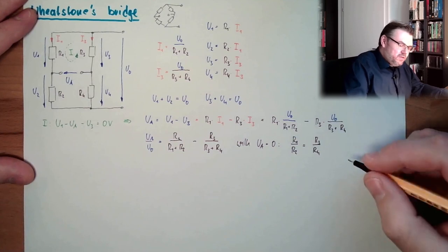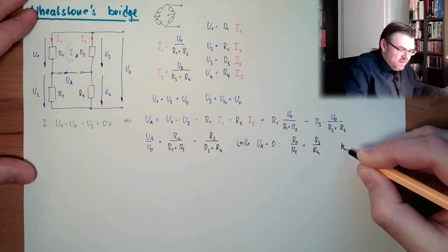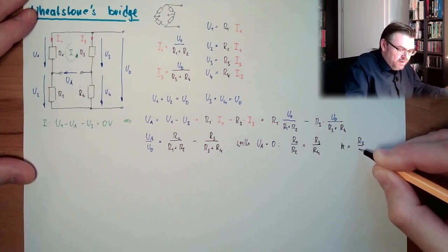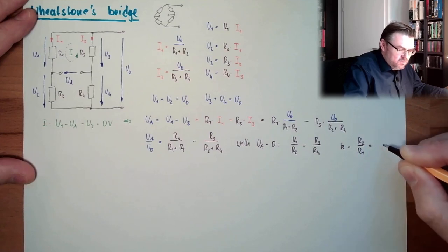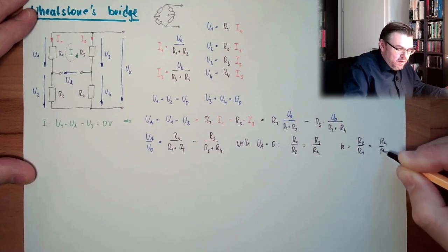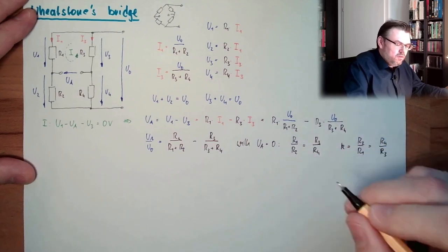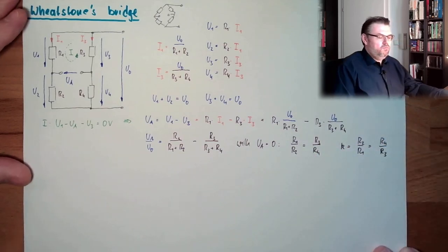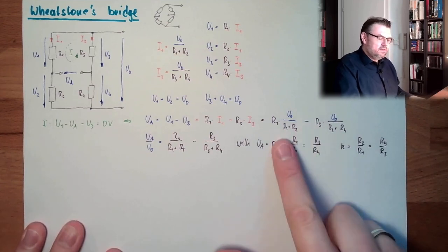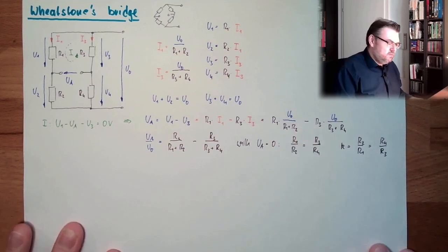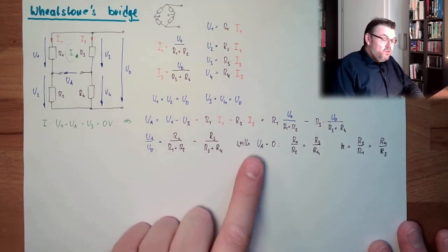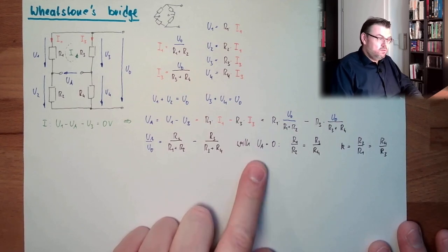So we define K, where K equals R2 divided by R1, and also R4 divided by R3. So this is one divided by K in each branch. Then Ua is zero when the bridge is balanced.